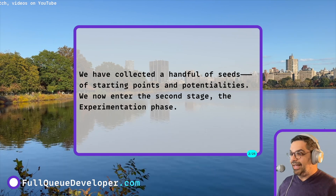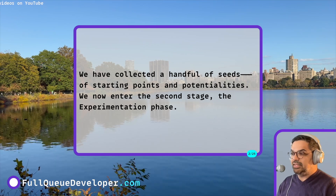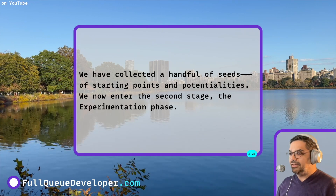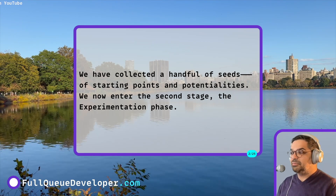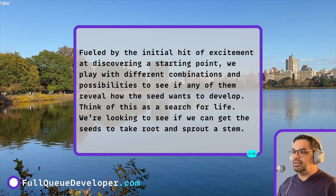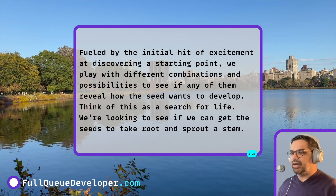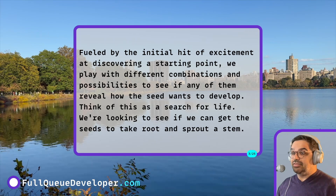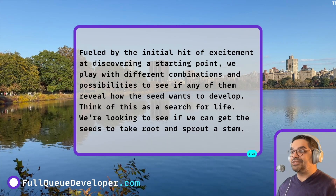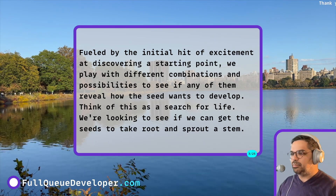We have collected a handful of seeds — he's referring to the previous chapter here — of starting points and potentialities. We now enter the second stage, the experimentation phase. Fueled by the initial hit of excitement at discovering a starting point, we play with different combinations and possibilities to see if any of them reveal how the seed wants to develop. Think of this as a search for life. We're looking to see if we can get the seeds to take root and sprout a stem.